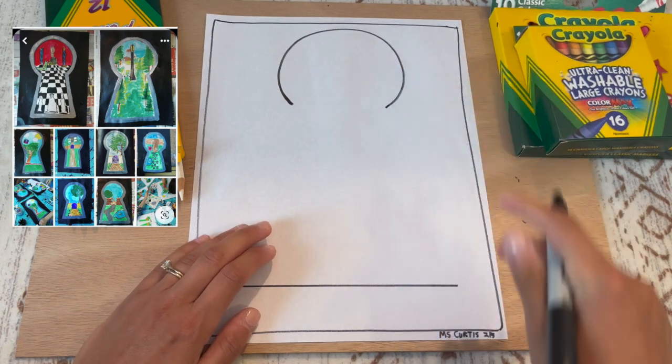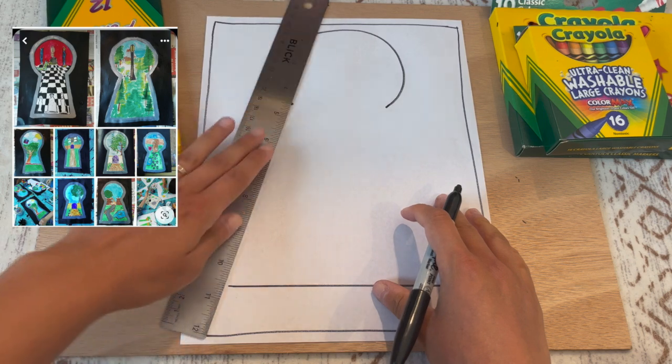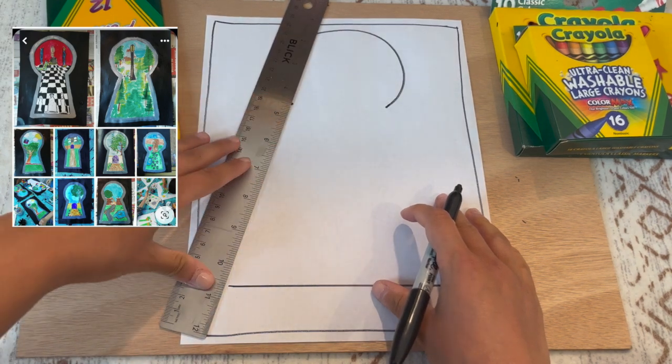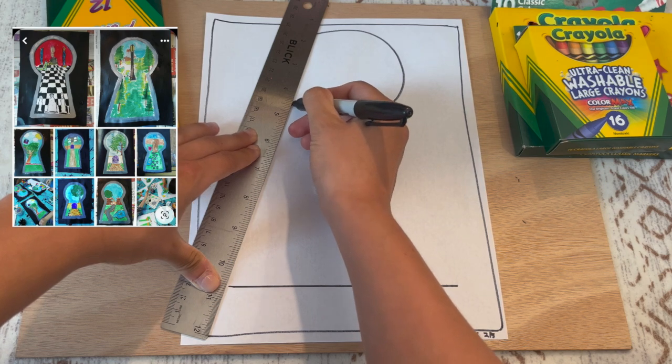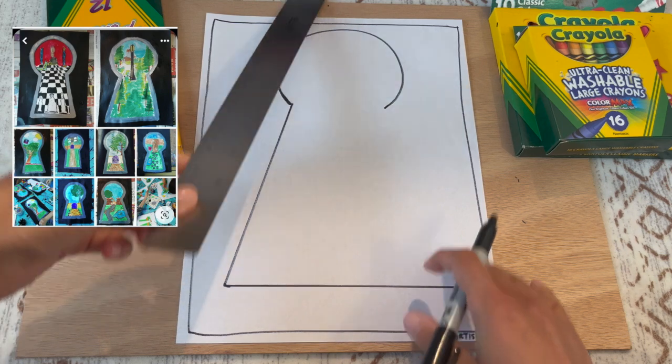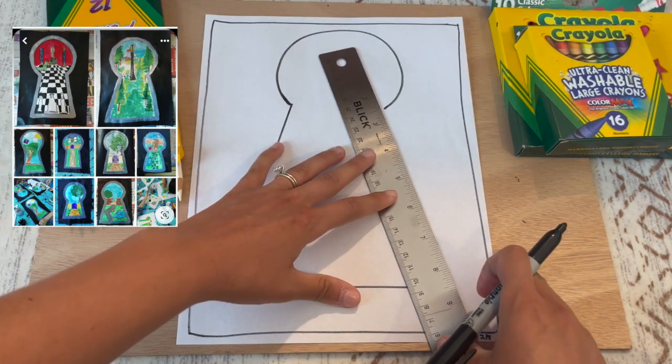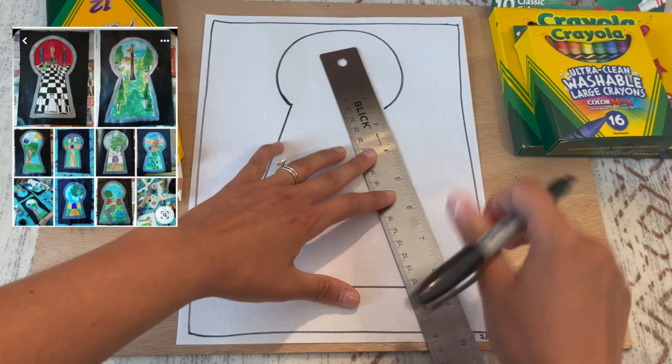Okay, and you want it to sort of end at the same spot on each side. Then you're going to connect that end to this end down here. Hold your ruler nice and tight.